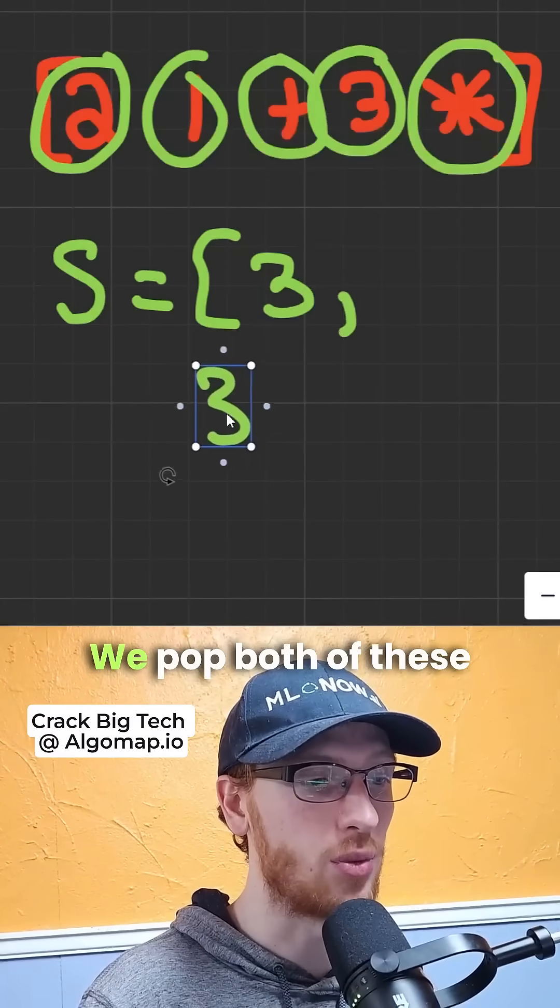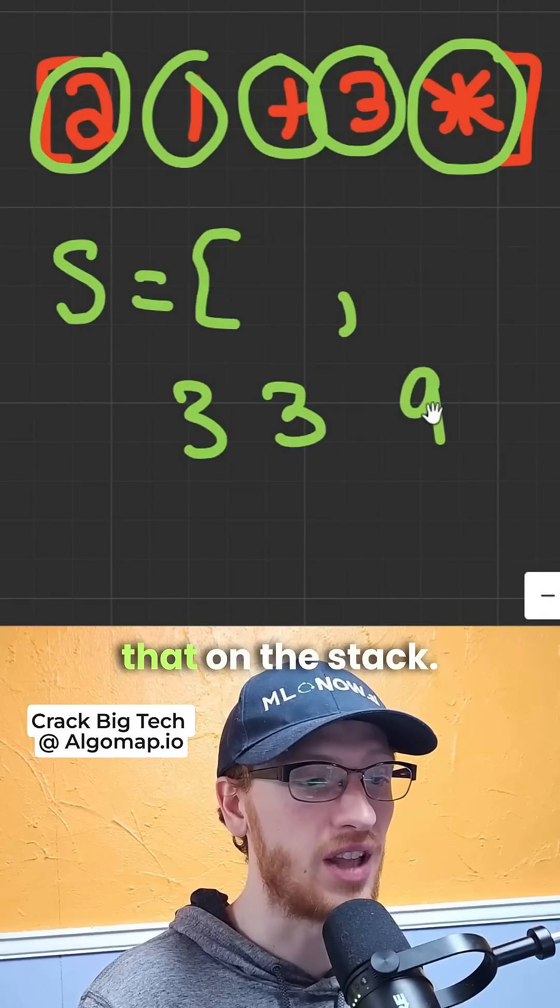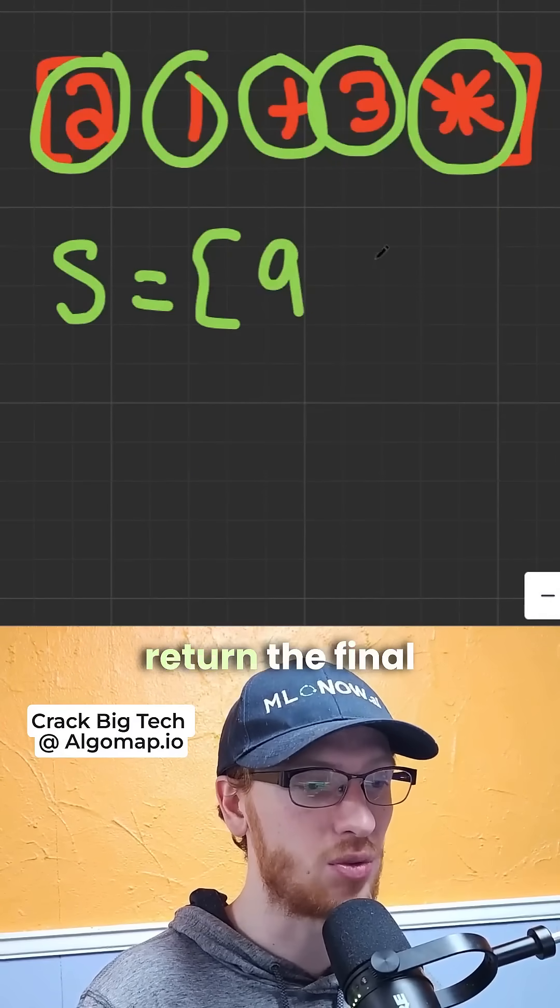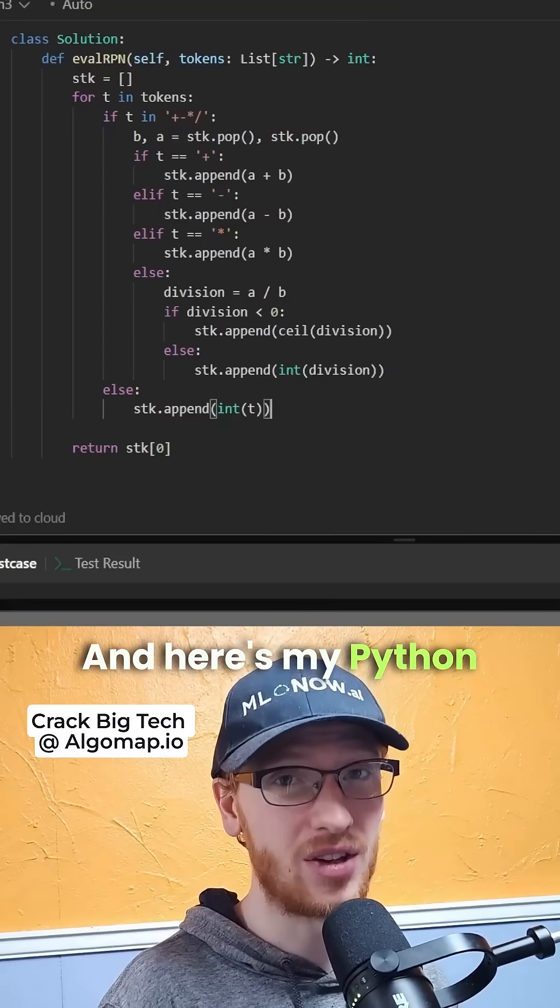And we do just like we did before. We pop both of these things off. We apply the operation. We are going to put that on the stack. You simply just return the final value that's left over in the stack. And here's my Python code.